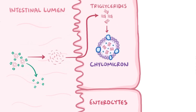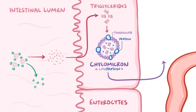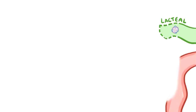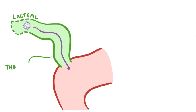The reassembled triglycerides get packed into a larger structure called a chylomicron. The chylomicron has lipids and proteins, so it's a lipoprotein. It has an outer membrane with phospholipids and proteins, and a hydrophobic core that has triglycerides, cholesterol, and fat-soluble vitamins A, D, E, and K. The chylomicron then leaves the enterocyte, but it's too large to get into the endothelial cells, so instead it enters a nearby lymphatic capillary called a lacteal. From there, the chylomicron floats in the lymph and flows into the thoracic duct, then gets dumped into the blood, essentially bypassing the portal vein.